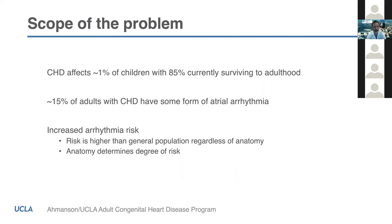Congenital heart disease affects 1% of children, and the vast majority of these patients are now living into adulthood. If you look at survivors into adulthood, there's a 15% prevalence of supraventricular arrhythmia — specifically atrial arrhythmia — in adults with congenital heart disease. The risk is greater than in the general population with acquired heart disease or without heart disease. A rule of thumb is that the anatomy determines the degree of risk, and I'll focus on the anatomical categories associated with the greatest risk.